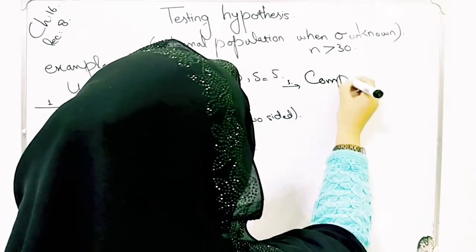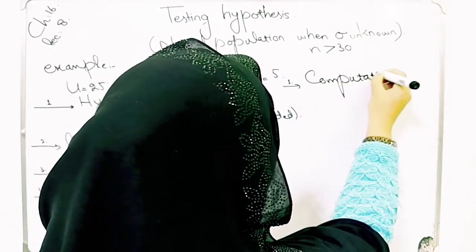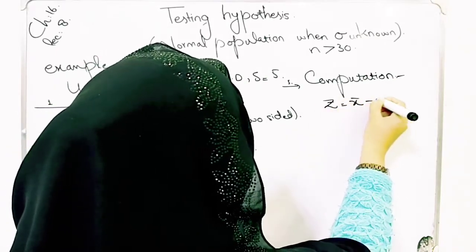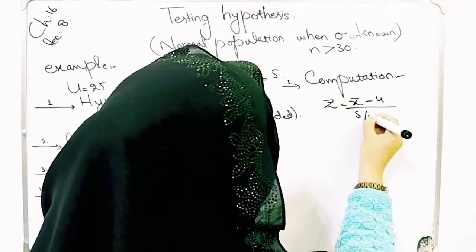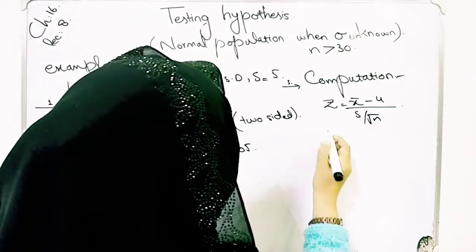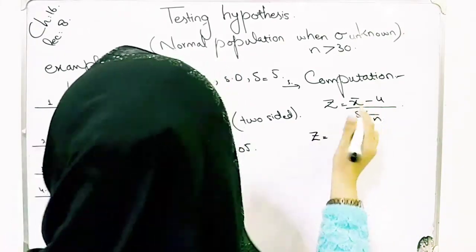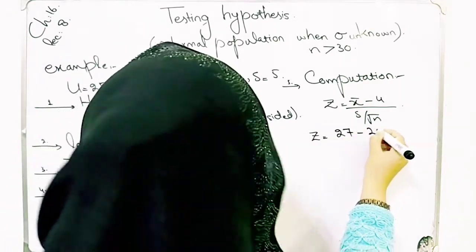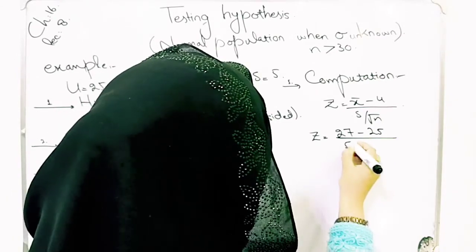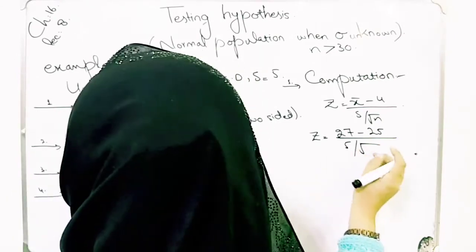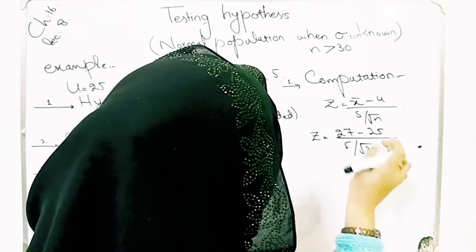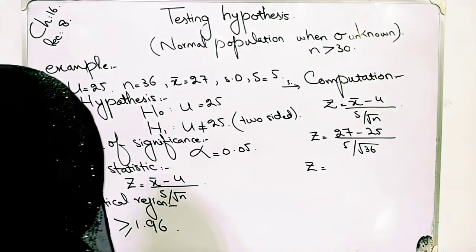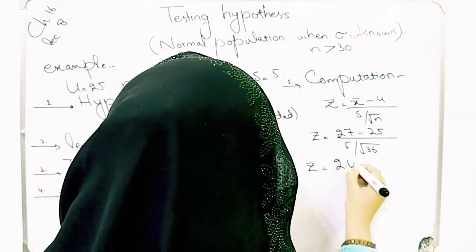Step 5: Computation. z = (x̄ − μ) / (s / √n). Putting in the values: z = (27 − 25) / (5 / √36). When you solve this using the calculator, the answer is z = 2.40.